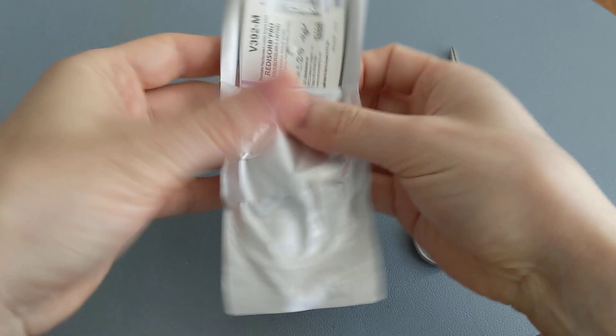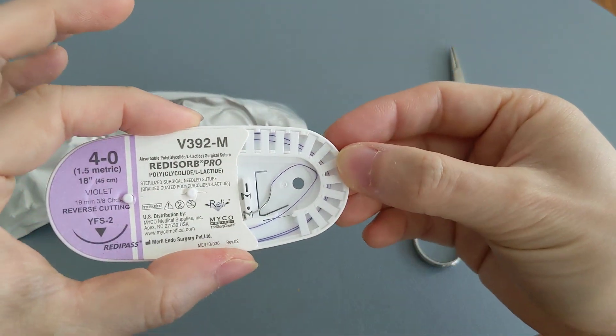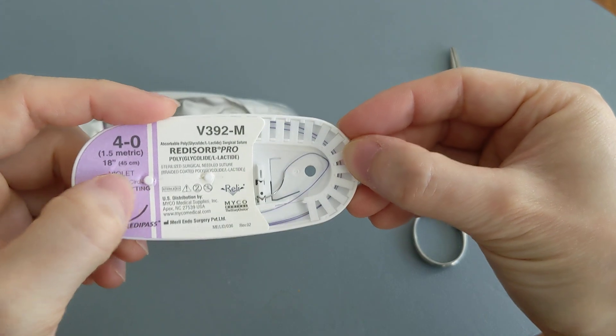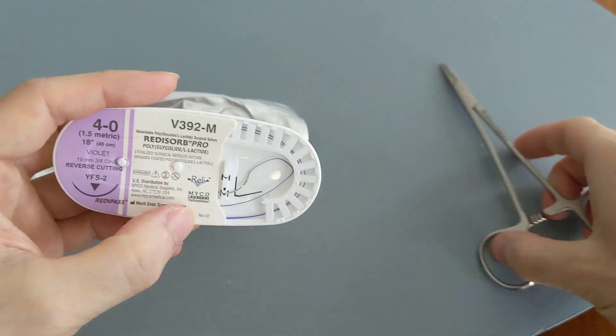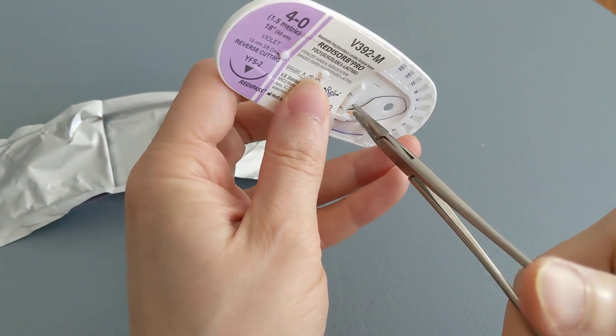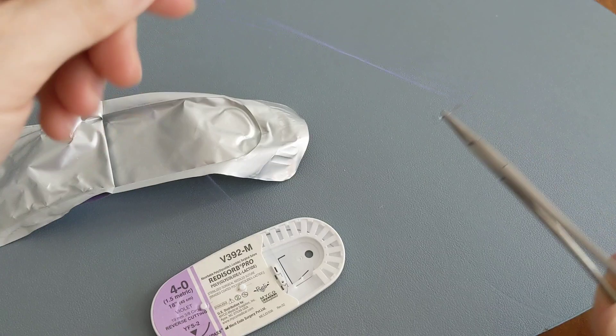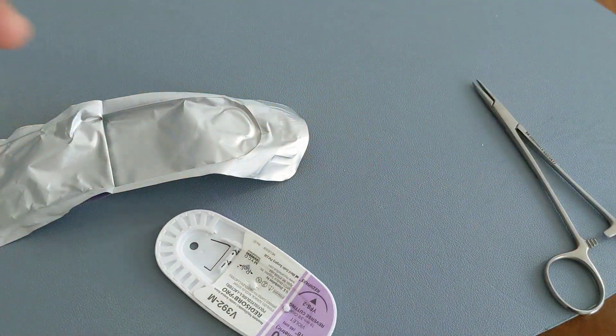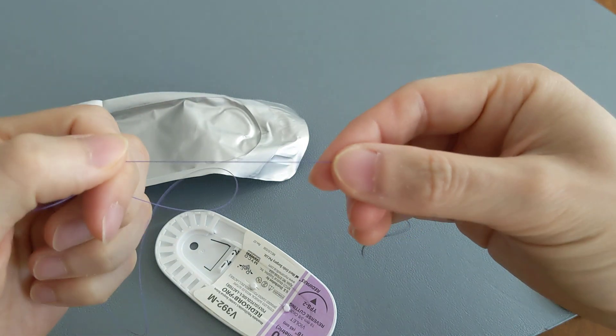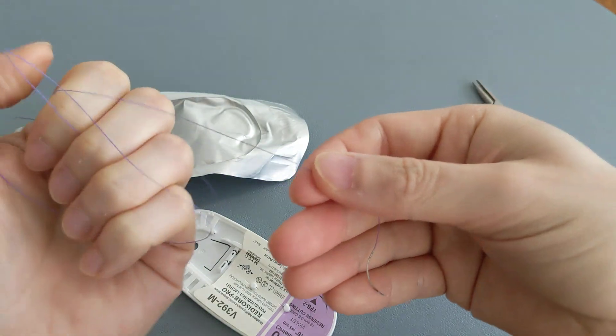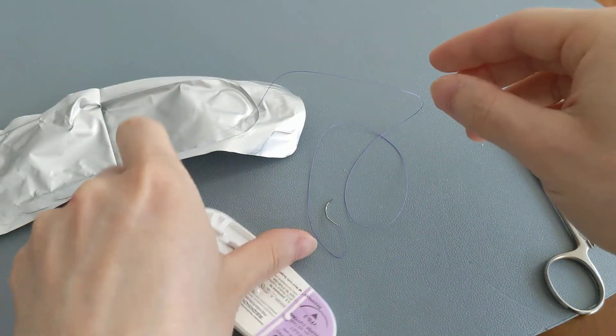So here are some stitches and these are very purple. It's actually labeled as violet in color, but let me take it out so you can see it a little bit better. It's definitely purple.